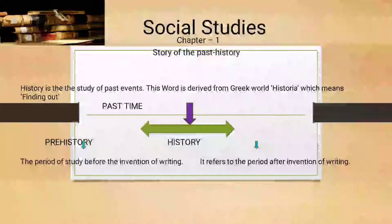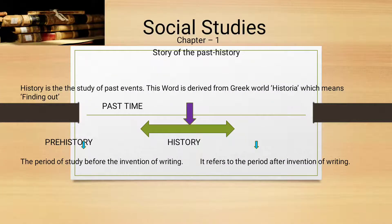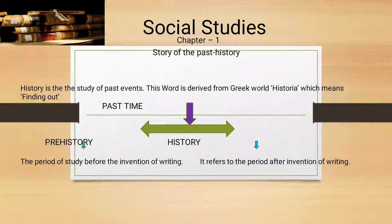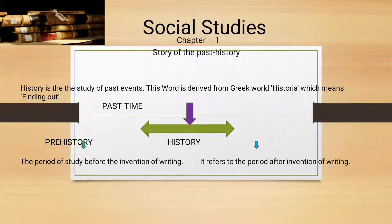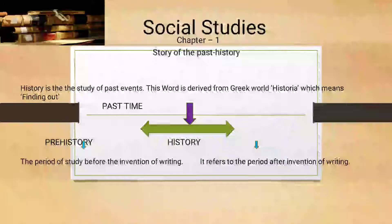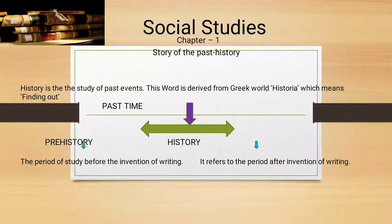By studying history, we can get to know about our past — what happened in the past. Past time was categorized into two categories: prehistory and history. Prehistory means the period of study before the invention of writing. In prehistory, writing was not invented, whereas in history, writing was invented. So we can segregate both past time periods into prehistory and history.